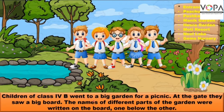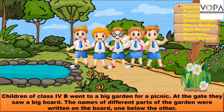Children of class 4B went to a big garden for a picnic. The names of different parts of the garden were written on the board. जिसके बोर्ड पर बाग के मुख्तलिफ हिस्सों के नाम लिखे हुए थे — वन बिलो दा अदर — एक के नीचे दूसरे — कई लंबी फेहरिस्त थी।